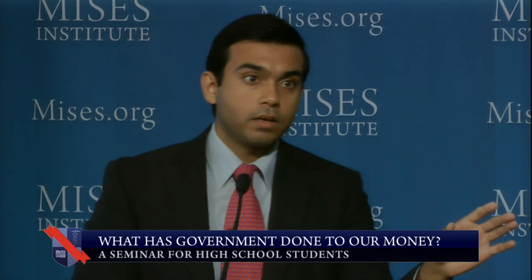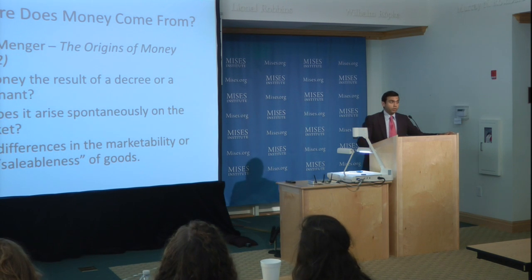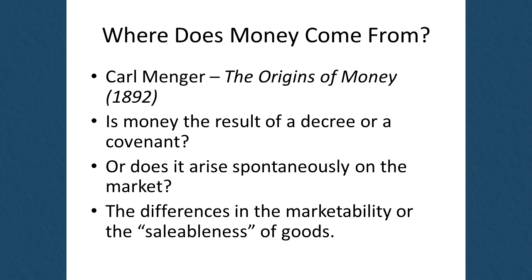But with money, lots of these problems can be overcome. So now we come to the real topic: how does money arise? How do we get from a place where we have no money and all these exchanges are so difficult to make, to a situation where there is money? What is the chain of cause and effect? The best work on this topic was written by the founder of the modern Austrian school, Carl Menger, called 'The Origins of Money,' written in 1892. It's available for free on mises.org.